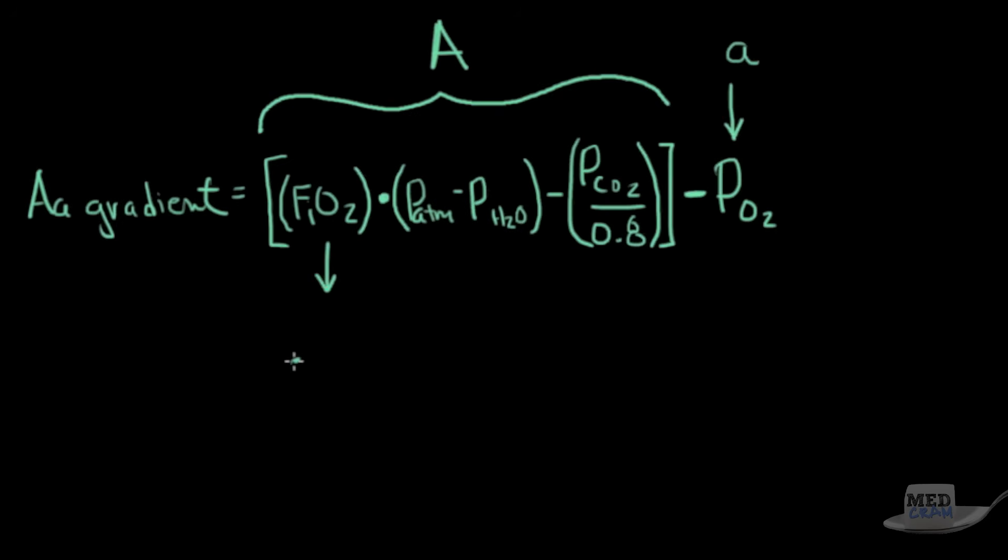FiO2 in this case would be 0.21. P atmosphere, let's say this is at sea level. That would be 760 mmHg. The P of water is about 47. And the PCO2 would be 40 divided by 0.8. So let's go through and let's say PO2. What's a normal PO2? Around 86.